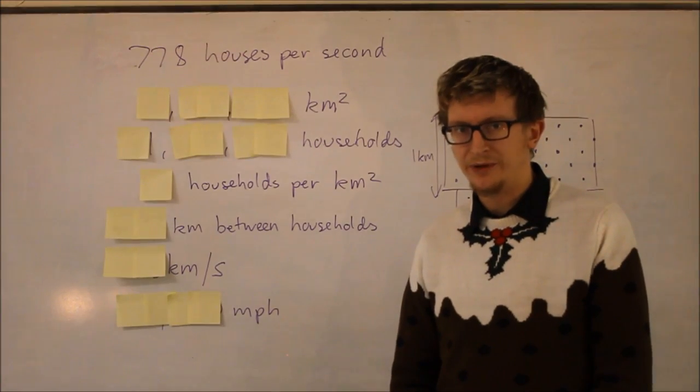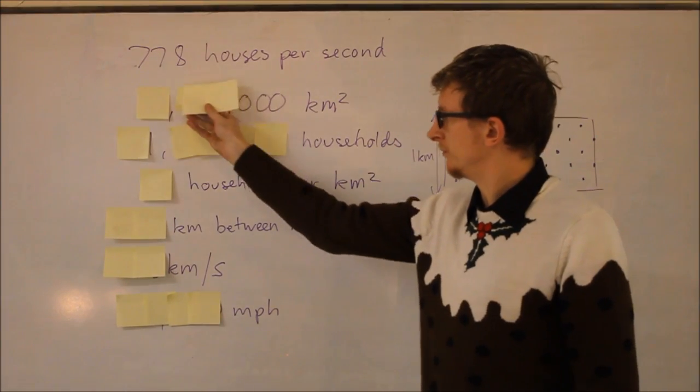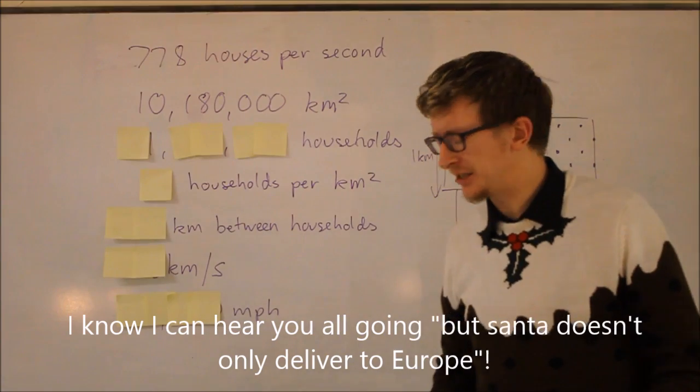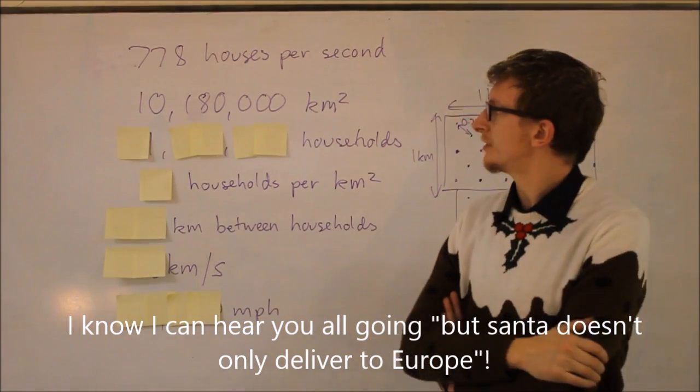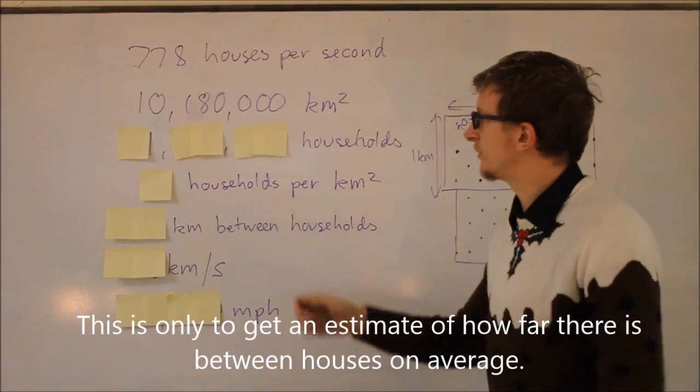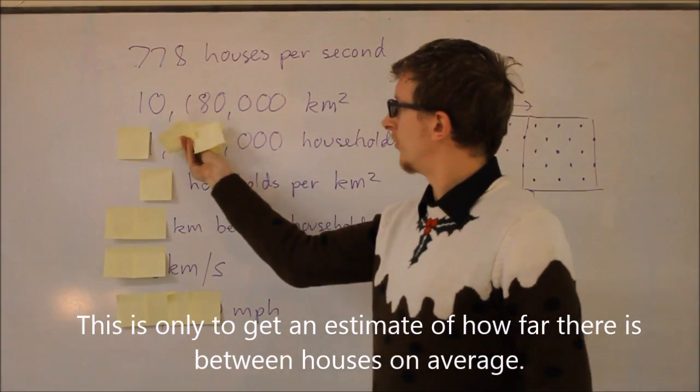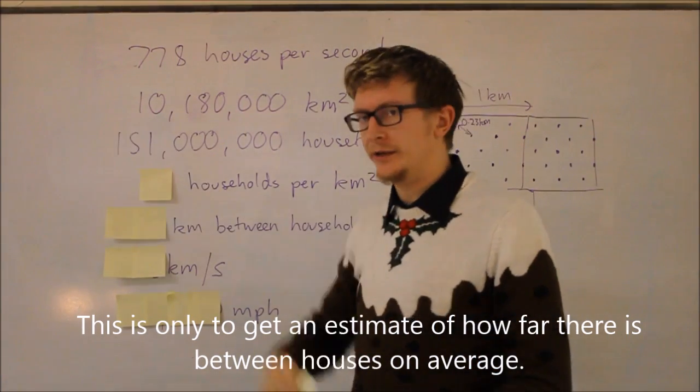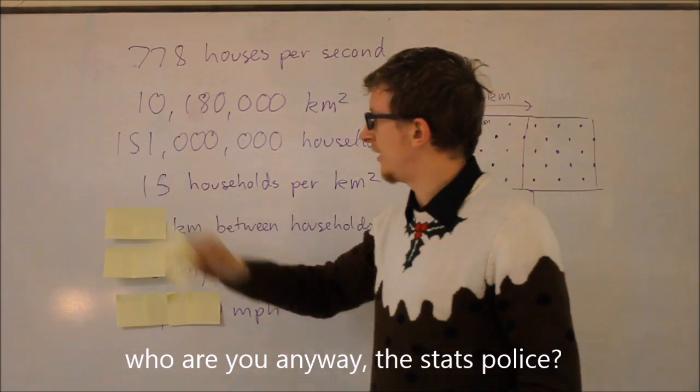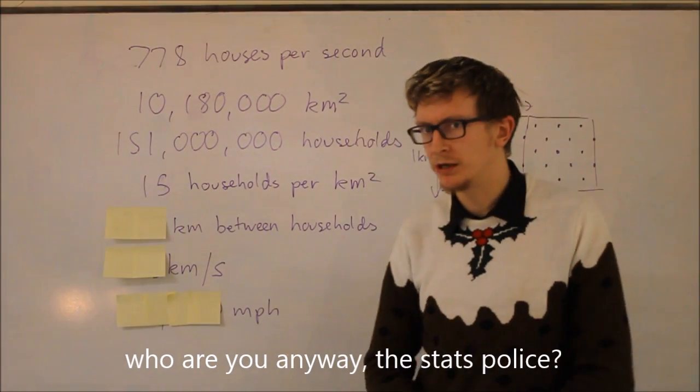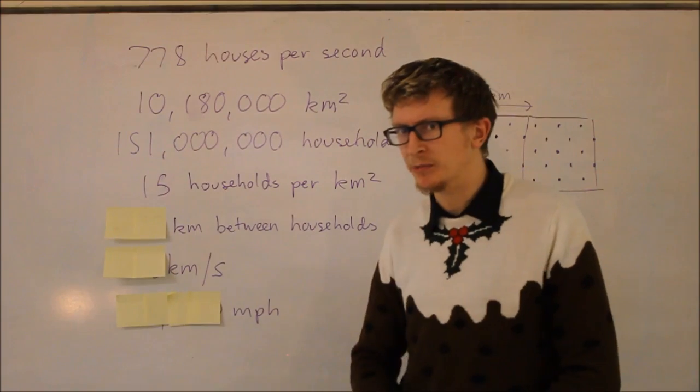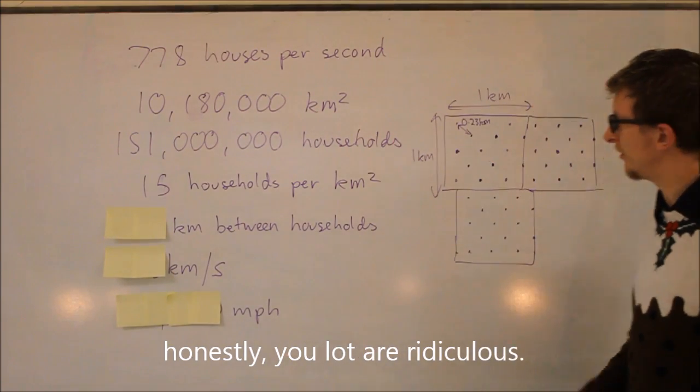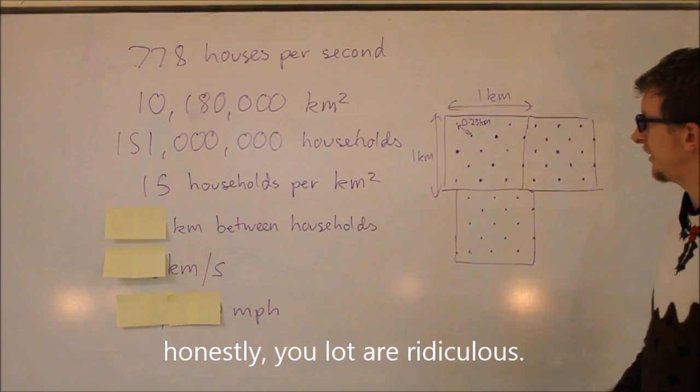Now here comes the real science. The area of Europe, which we are taking as an indicator of how far Santa has to go, is 10,180,000 km². In that area there are 151 million households. That gives an average of 15 households per km².